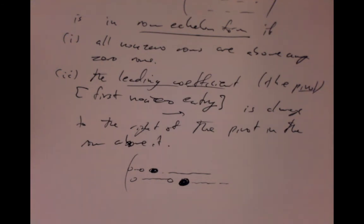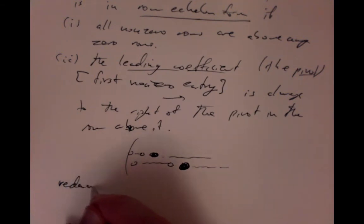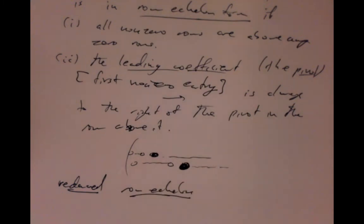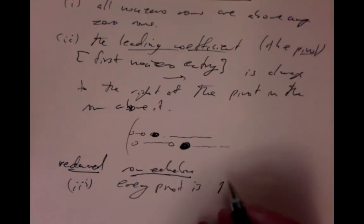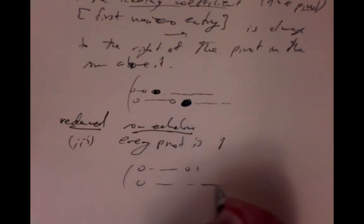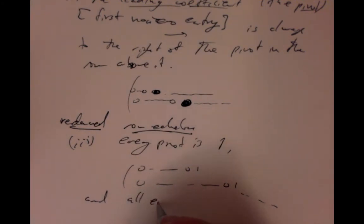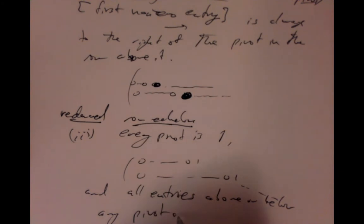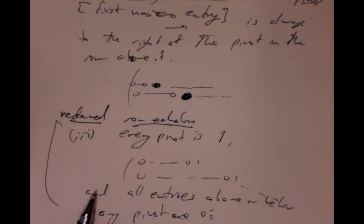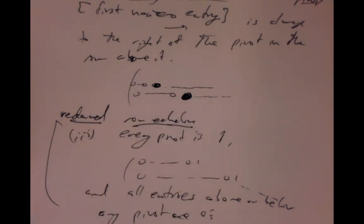There's a slightly stricter version of row echelon form called reduced row echelon form. It satisfies the additional condition that every pivot is a one — is the number one. So we have some zeros and then a one, some zeros, going even further over, then a one, and so on. And we also require that all entries above or below any pivot are zeros. We could always aim for reduced row echelon form, but it's faster to just go to row echelon form and then solve from there.